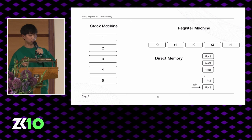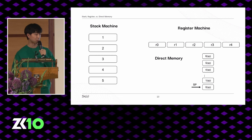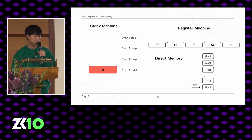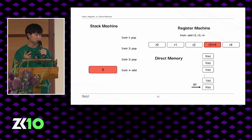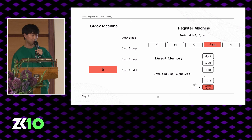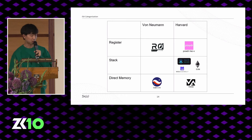Another choice is the internal machine state memory model. There are three options ZKVMs use today: the stack machine, the register machine, and the direct memory model. In the stack machine, you have many data movement operations to access the top of the stack, but simpler instructions. In a register machine, instructions are more complex but there are far fewer data movement operations. In direct memory, you have zero data movement operations but more complex arithmetization.